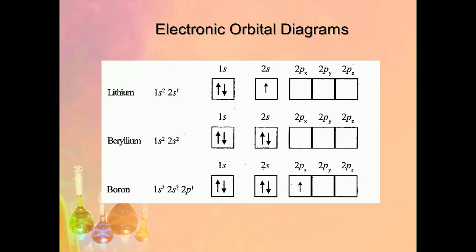Here are some orbital diagrams. For lithium, it may be handy to have a periodic table nearby. You've got your 1s, 2s, and 2p orbitals to fill in. Lithium has 3 electrons, finishing on 2s¹. Remember to fill each orbital singly first — when you get to degenerate orbitals like the 2p, 3d, or other p and d orbitals, fill each orbital with one arrow first, then go back to the start and begin pairing them up.